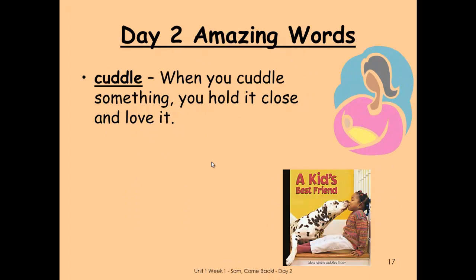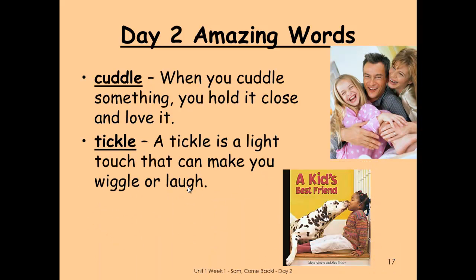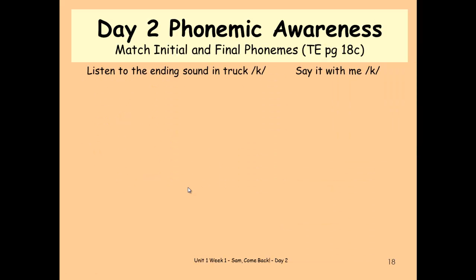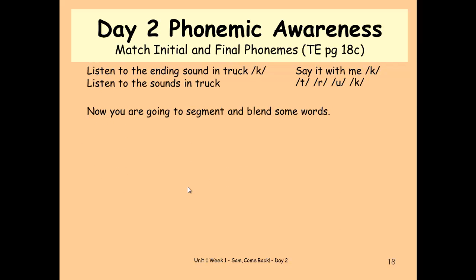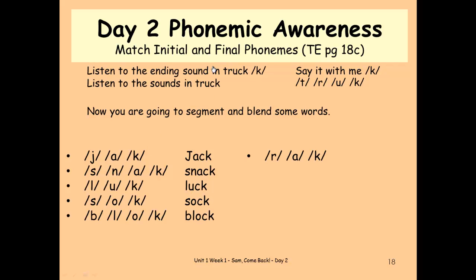Now here we go through our amazing words and go over the vocabulary. We have some images that pop up and some animations that help the kids understand what the amazing words really mean. They're actually just oral vocabulary so they don't have to learn how to write it — they just have to learn what it means and how to use it in sentences. These two amazing words happen to be from the big book of the week. Then we do our phonemic awareness. I read the directions to them, they say it with me, and then I tell them we're going to segment and blend some more words. I have the kids blend, segment, and blend with me, and I do them one by one as we go along.